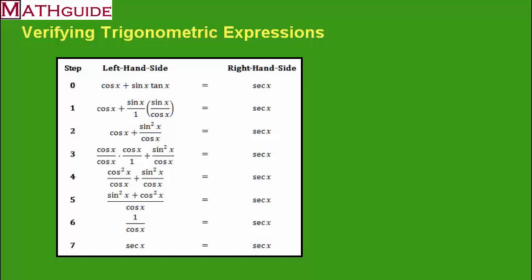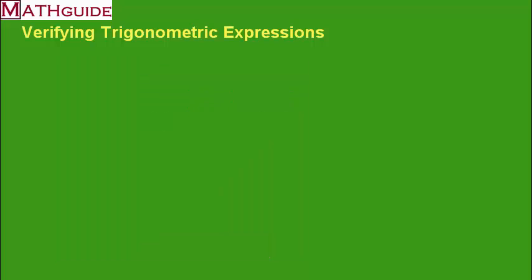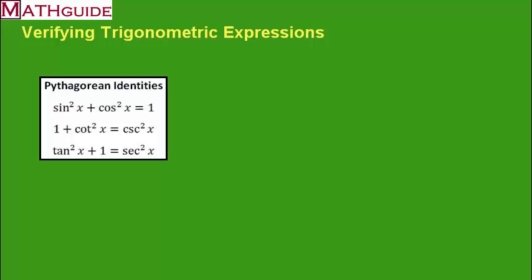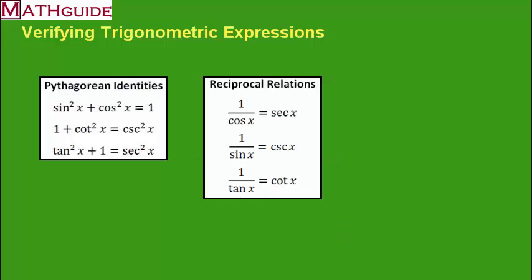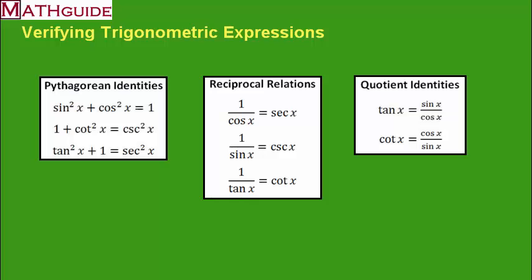Let's talk about the tools available. The first set are called Pythagorean identities — these are relations that are very helpful, and I prove where they come from on MathGuide.com in a different video. Next are called reciprocal relations: cosine and secant are reciprocals, sine and cosecant are reciprocals, and tangent and cotangent are reciprocals. Finally, the quotient identities: tangent equals sine over cosine, and cotangent equals cosine over sine.